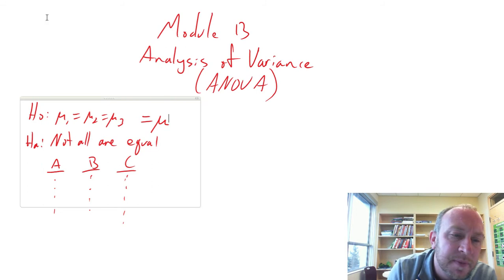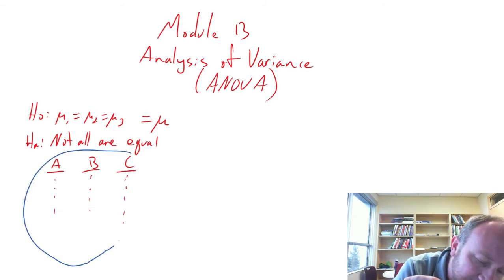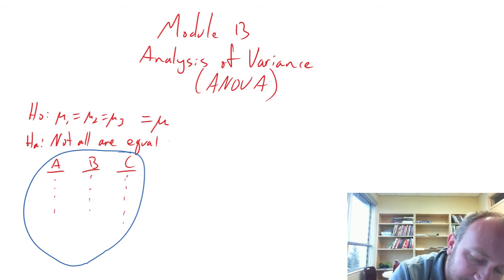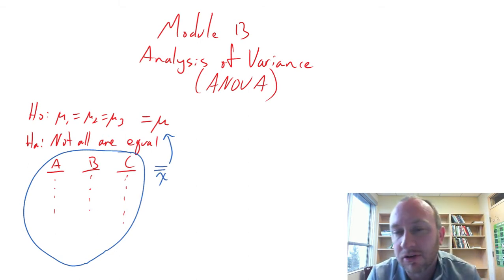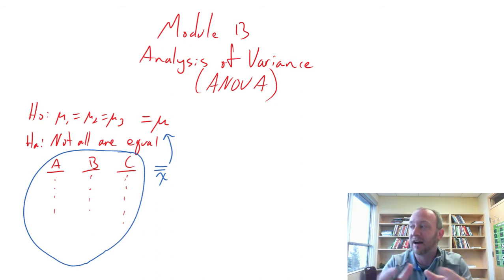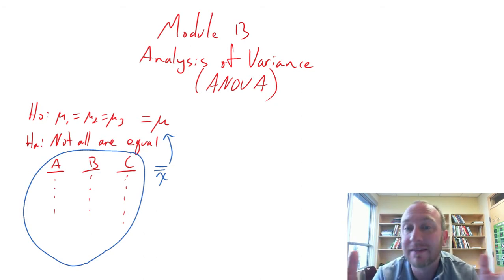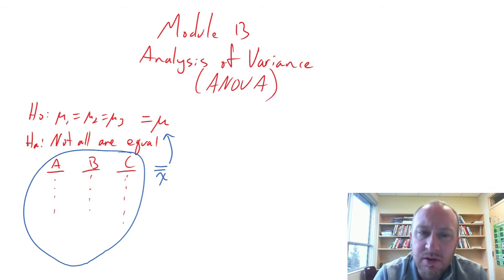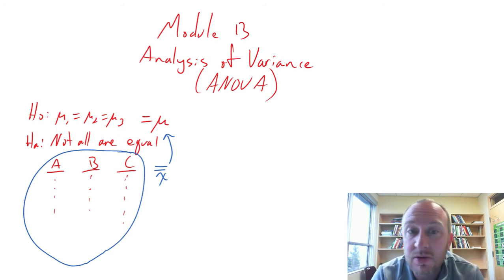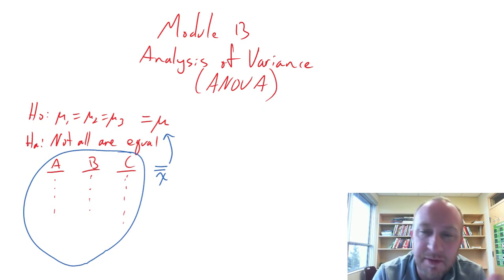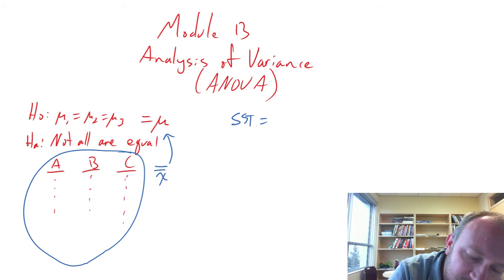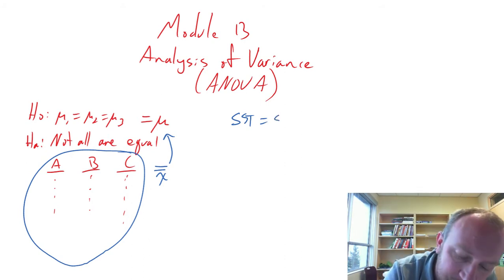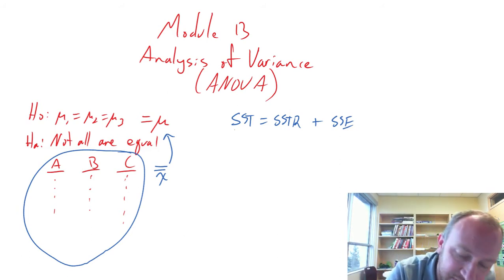If that's the case, our best guess of this common population mean mu is what we call x-double-bar, or the grand mean — the average of the entire data set treated as one sample. With that, we perform partitioning, splitting the data set into its sources of variation. Right now we partition into sum of squares treatment (SSTR) plus sum of squares error (SSE), and together those give us sum of squares total.